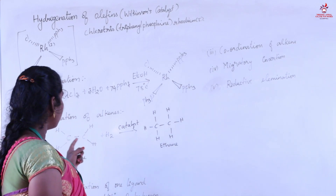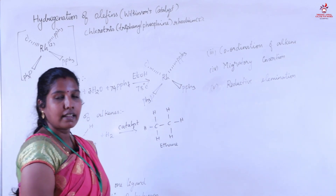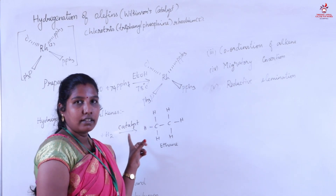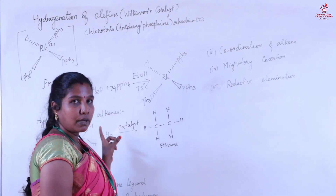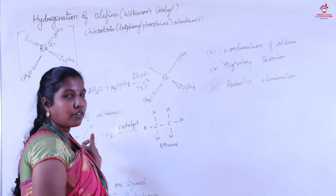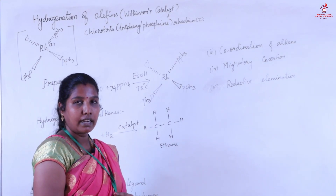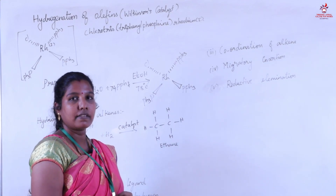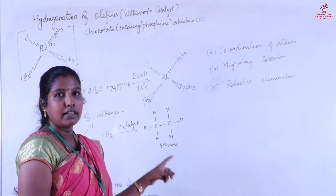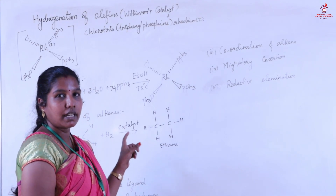Next we see about the hydrogenation of alkenes. Taking the example of ethene: ethene is treated with hydrogen in the presence of Wilkinson catalyst, and it will form ethane. This is a thermodynamically favorable reaction.